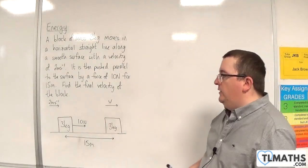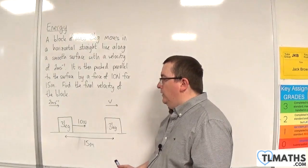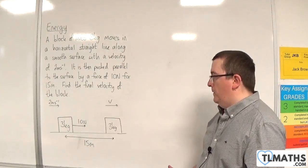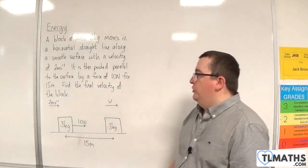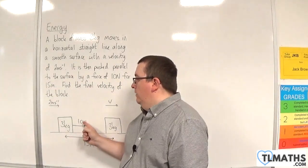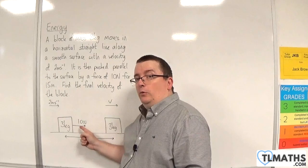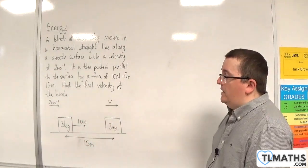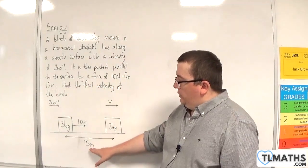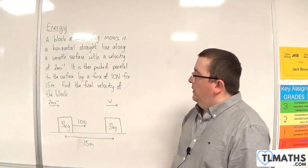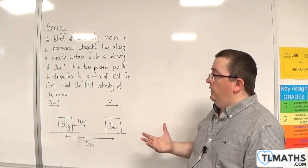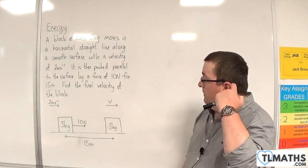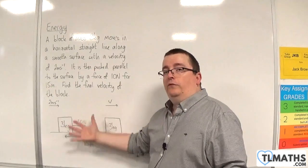What you would need to work out is the acceleration of the block. And you could just do that using the fact that you've got 10. So using F equals MA, Newton's second law. So 10 is equal to 3A. So A is going to be 10 thirds. You've got S. You've got the initial velocity. You've got the acceleration by Newton's second law. And you need to find the velocity. So the final velocity. And so you could use Suvat on this.